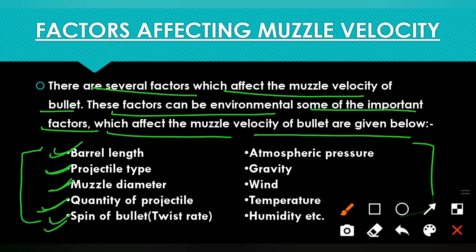Next is the spin of the bullet. When the bullet has a spinning or rotatory motion — also called gyroscopic motion or twist rate — this comes from the rifling present in the firearm. In rifled firearms, this twisting motion provides stability to the bullet and further enhances and increases its speed, directly impacting muzzle velocity.